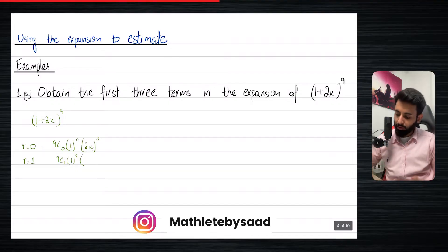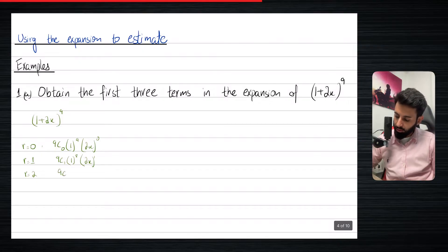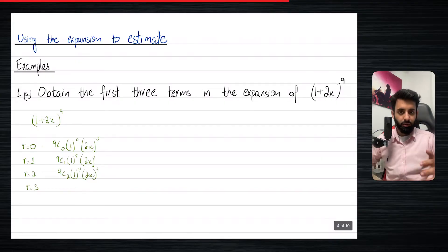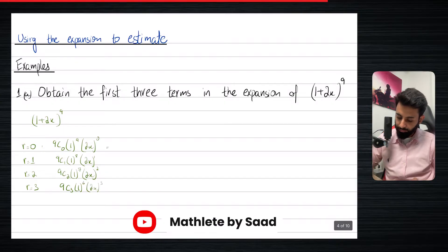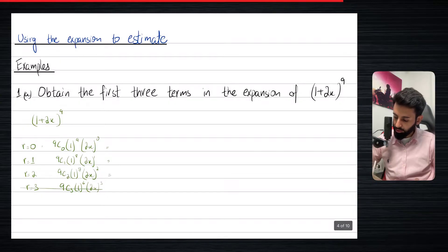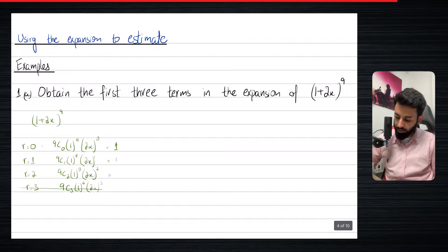Look at the value of r and the power of x and you'll notice a pattern. I'm afraid for the pattern to be officially revealed, you'll have to wait for the next video — I'll tell you what the pattern is and use the relevant concept to show how we can use it. Now, r equals to three is going to be the fourth term: nine C three, one raised to the power six and two x the whole thing cubed. But I just realized the question said the first three terms, not the fourth term, so we'll just cross that out. The first term is going to be one. Just remember that whenever the first term of the expansion is one, the answer of the first term is going to be one also. And then when r is one, nine C one is nine, into two x, so that's going to be 18x.